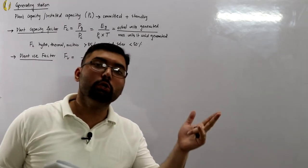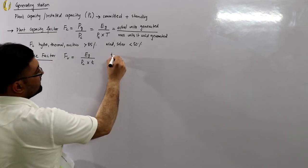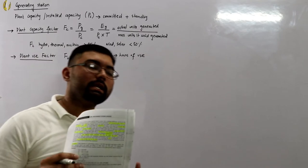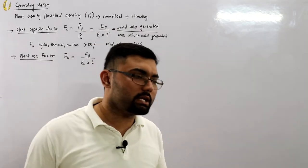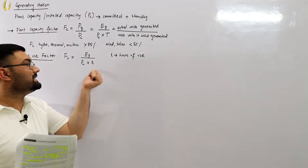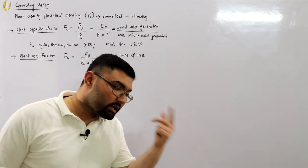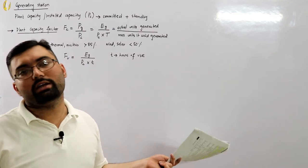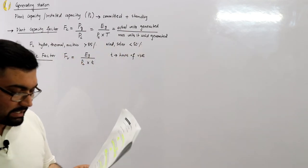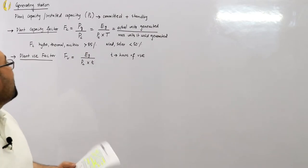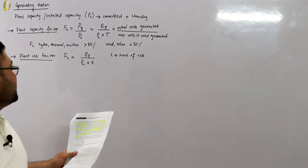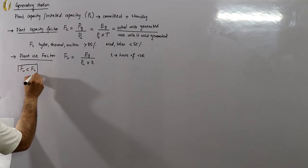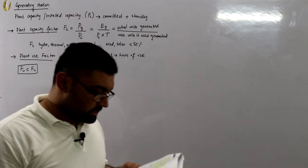The plant use factor FU is given by EG divided by PC times small t, where small t is the hours of use of the plant. For instance, if calculating over a year and the plant is off for maintenance for 60 days, those 60 days are excluded from small t. In the plant capacity factor, the whole year is counted. So FU will of course be less than FC.